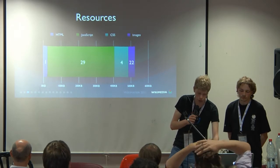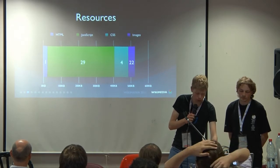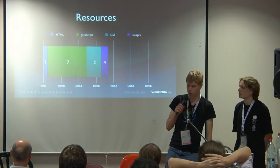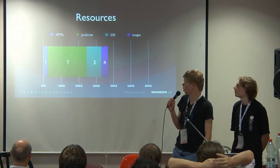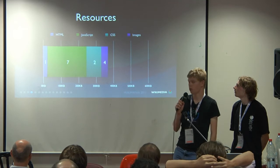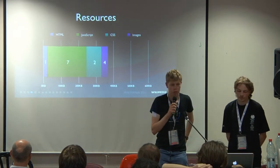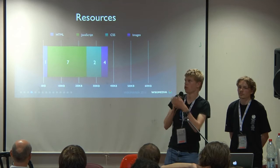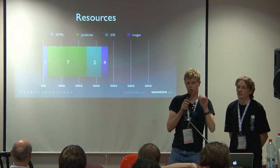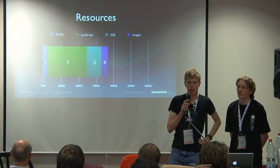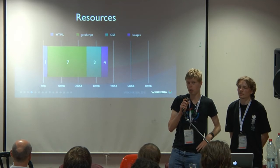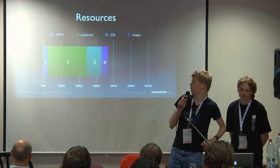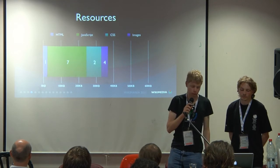After we deployed Resource Loader, the main page looked much better — we still had some multiple requests for things like JavaScript and images, but that is mostly due to user-specific things. The four images are the pictures on the main page; they're not the icons in the skin, because the number of requests for icons in the skin is zero — they're all inside the style sheets.